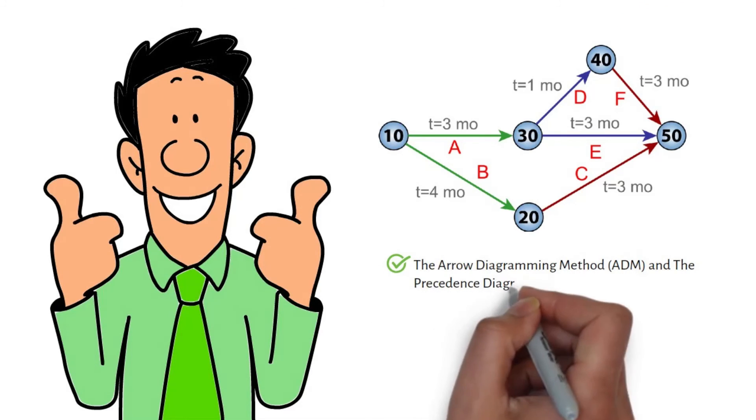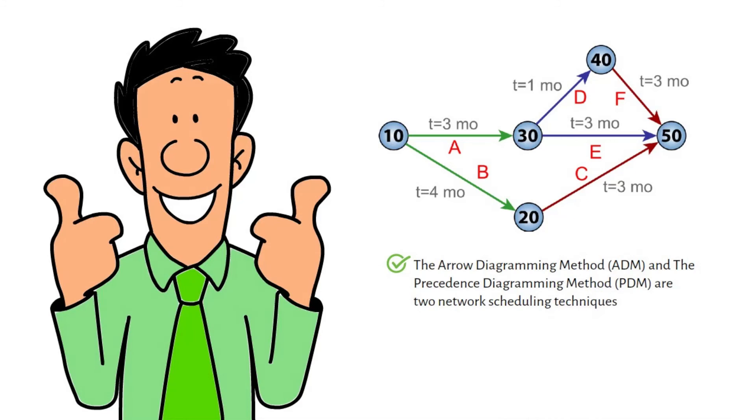The arrow diagramming method and the precedence diagramming method are two network scheduling techniques. The first one is the traditional one used widely in the past. The second one is the current method that we are using widely now.